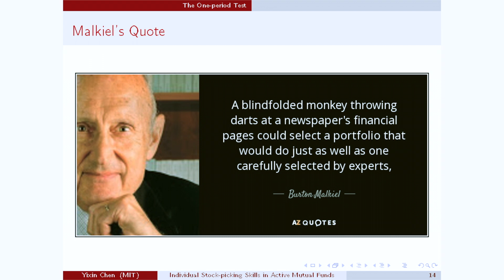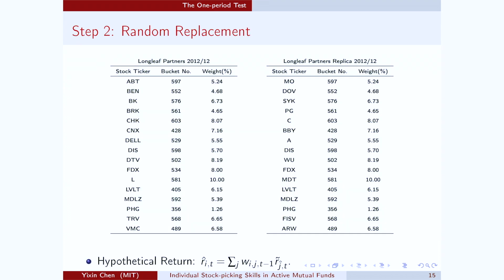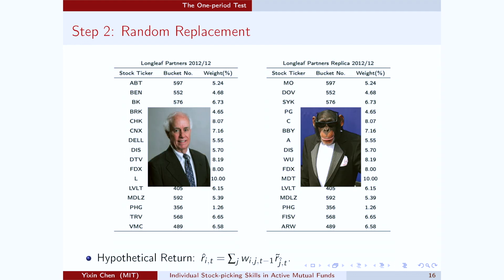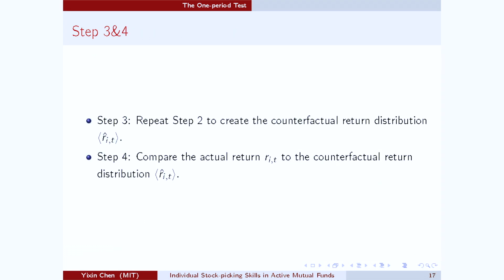Burton Malkiel has a famous quote saying that a professional money manager cannot outperform a blindfolded monkey throwing darts on a newspaper. Essentially what I'm doing here is that I want to create my own replica of the fund, which has the same portfolio weight distributions and the same characteristics, but I'm going to hire a monkey to pick stocks for me. This monkey is going to give us a return. Step number three is to simply repeat this step — I'm going to hire a bunch of monkeys, each one giving us a return, so we end up with a return distribution.